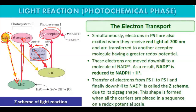Photosystem I converts NADP+ to NADPH. This is the Z scheme — it is Z-shaped. The light harvesting complex with Photosystem II and the light harvesting complex with Photosystem I together make a Z shape, which is why we call it the Z scheme. This Z shape is formed when all the carriers are placed in sequence on a redox potential scale.